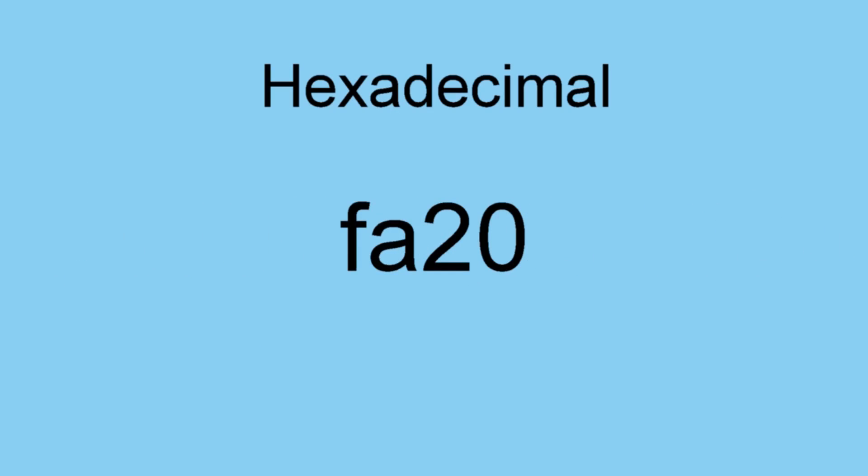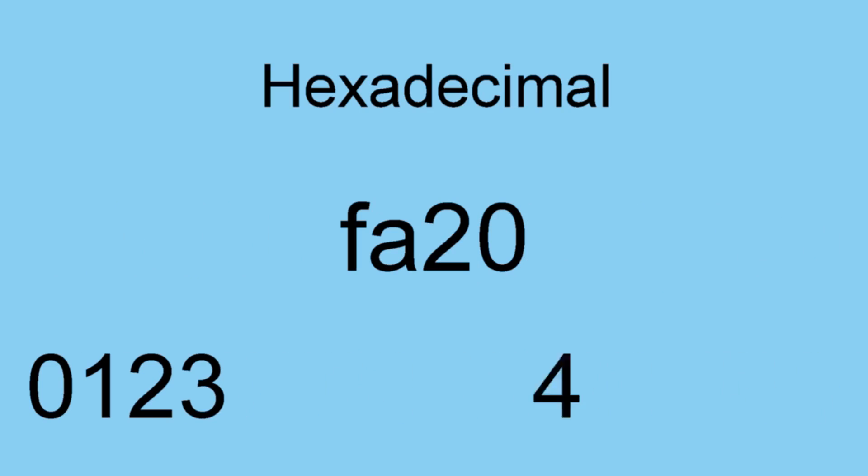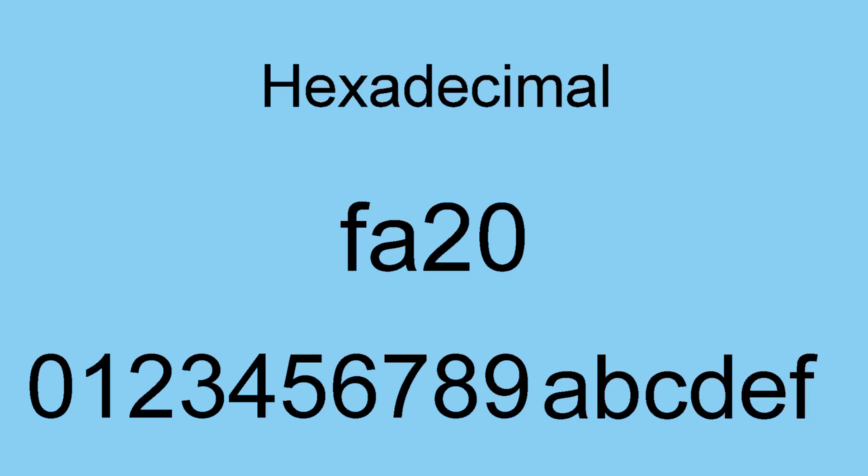Another system is hexadecimal, a base 16 system. Each place increments by a factor of 16. The 16 digits are 0 through 9, followed by A through F. This is my favorite, but then I like to write 6502 machine language by hand, so take it with a grain of salt.